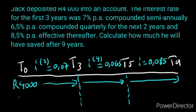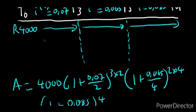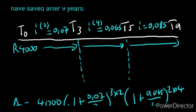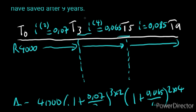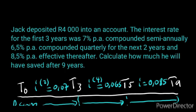Whenever there's a deposit, put that amount at T0. Whenever there is a change in interest rate, put dotted lines. Draw arrows that stop and continue so that you know wherever it stops and continues, that's a new bracket. This is bracket one (0 to 3 years), bracket two (3 to 5 years, which is 2 years), and bracket three (5 to 9 years, which is 4 years). Calculate each bracket according to its respective time period.